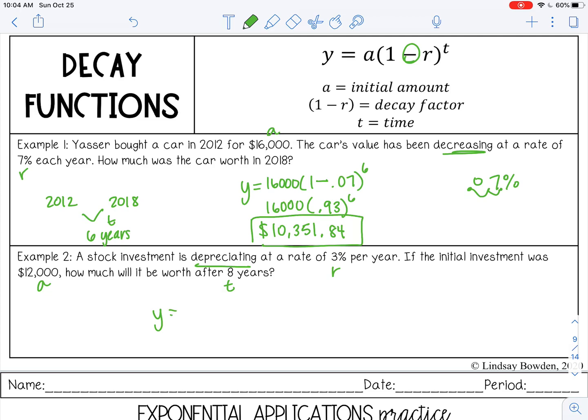So Y equals 12,000 times 1 minus - we need to change 3% to a decimal, so 0.03 to the eighth power. Simplify inside parentheses, 0.97 to the eighth power. And then plug it in your calculator. And you get $9,404.92.